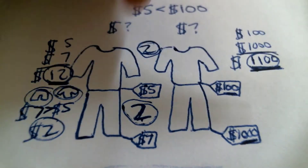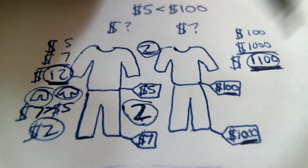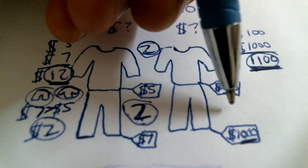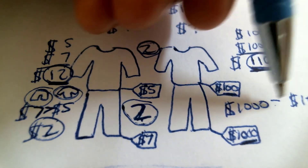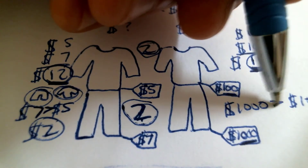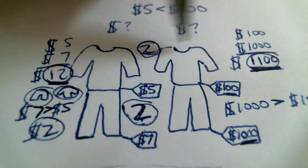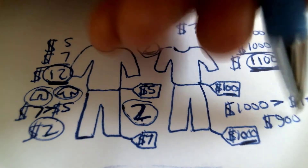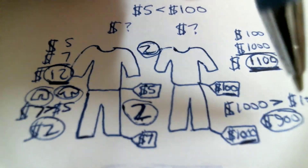Which one costs more — this pair of pants or this shirt? Which one is more expensive? Well, these pants cost $1,000 and the shirt costs $100, so the pants are more expensive than the shirt. How much more expensive are the pants than the shirt? The pants are $900 more expensive than the shirt. The pants cost $900 more than the shirt.